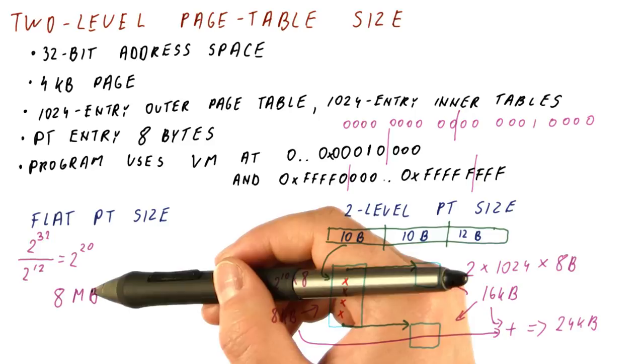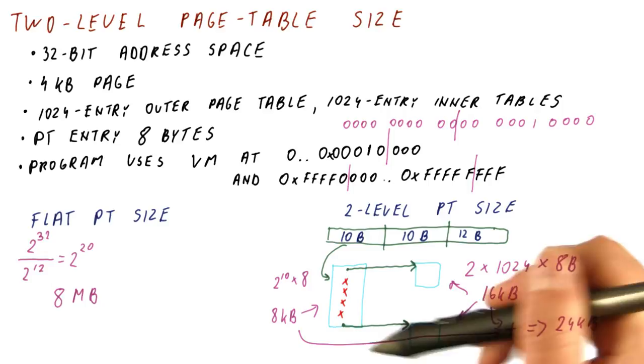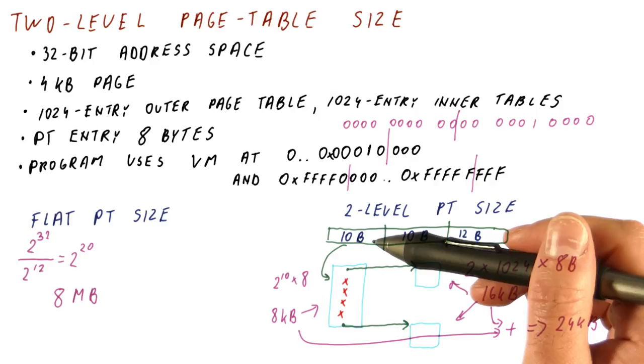And this is why multi-level page tables are almost exclusively used in today's processors, especially when we have a 64-bit address space.